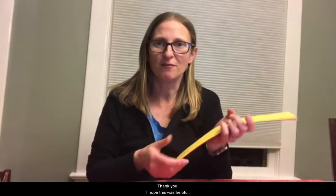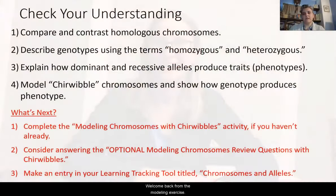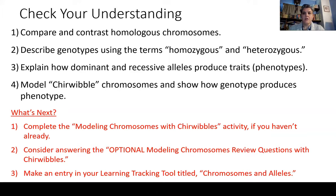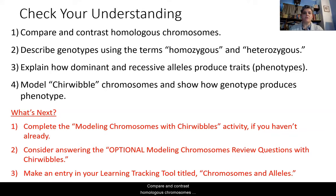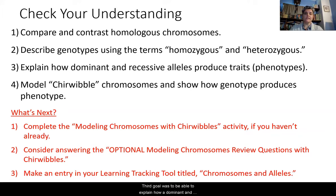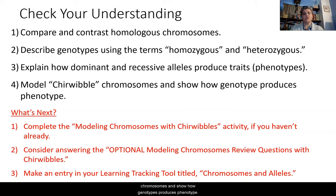When you get to Part D, you will look at your combination of chromosomes and write down what trait you will observe based on the combination of alleles from the two chromosomes. Welcome back from the modeling exercise. We're going to do a check for understanding and talk about what our next steps are. We've gone through vocabulary and seen how the modeling is supposed to go. Our goals were to compare and contrast homologous chromosomes, describe genotypes using homozygous and heterozygous, explain how dominant and recessive alleles produce traits or phenotypes, and model cherwibble chromosomes to show how genotype produces phenotype.